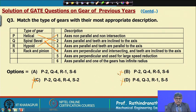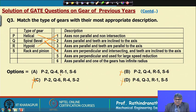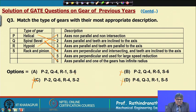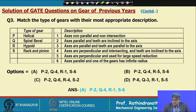R1 eliminates option B. For rack and pinion (S), one of the gears has infinite radius — the rack — matching description 6. So S matches with 6. Combining P2, Q4, R1, S6, the answer is option A.